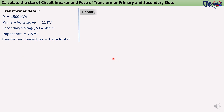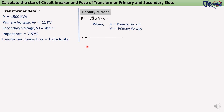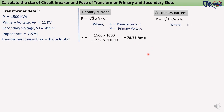For primary current, using the formula P = √3 × Vp × Ip: Ip = (1500 × 1000) ÷ (1.732 × 11,000) = 78.73 ampere. This is the primary current. For secondary current, using the same formula, we get 2087 ampere.